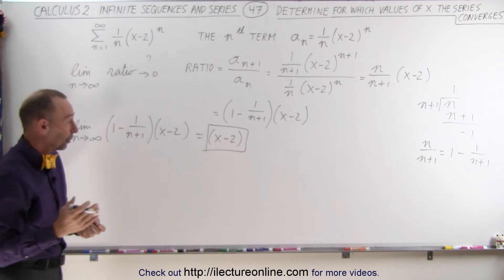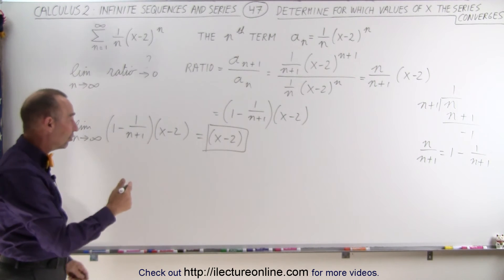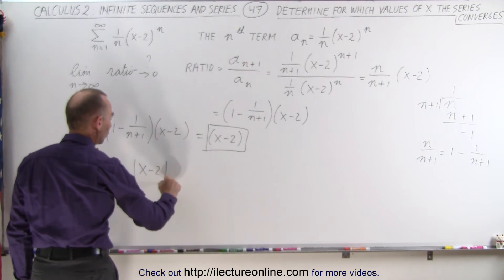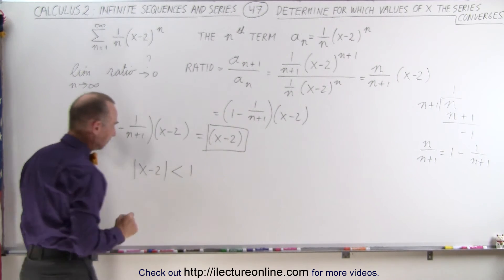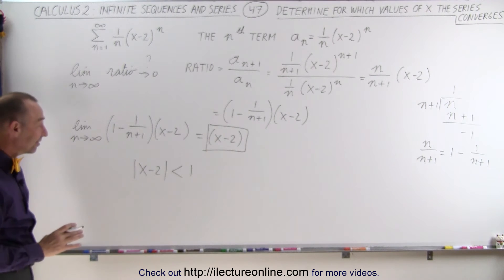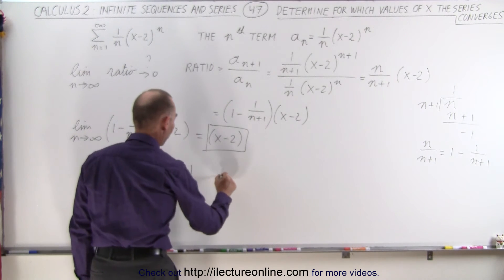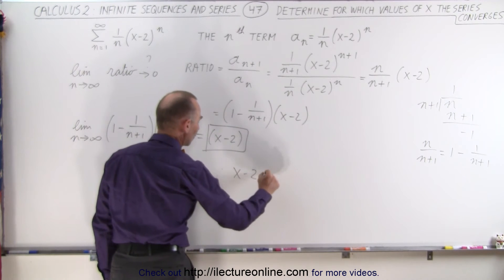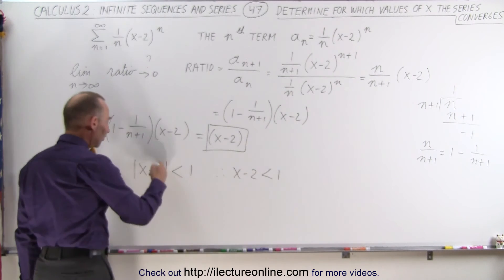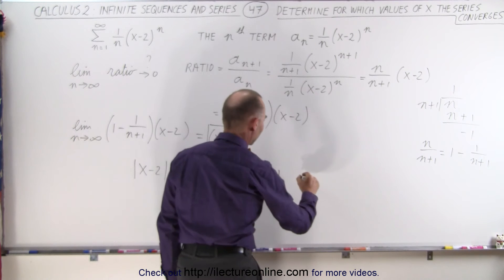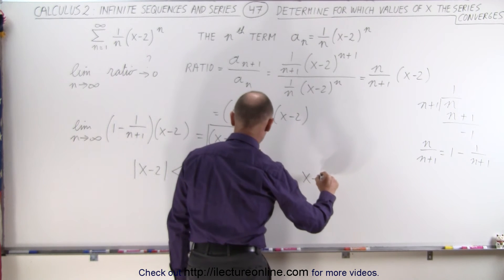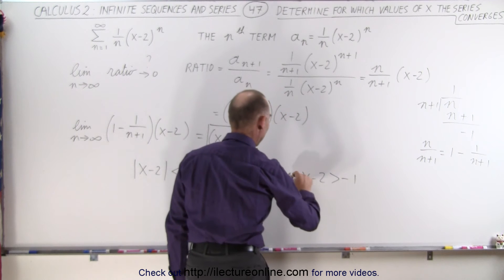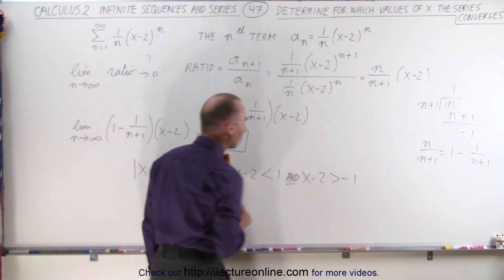Well, the necessary condition then is that the absolute value of x minus 2 must be less than 1. And we can solve that by saying that means, when this is a positive value, x minus 2 must be less than 1. And if this is a negative value, then we can say that x minus 2 must be greater than negative 1. And that must be an and condition. Both of these must be true.